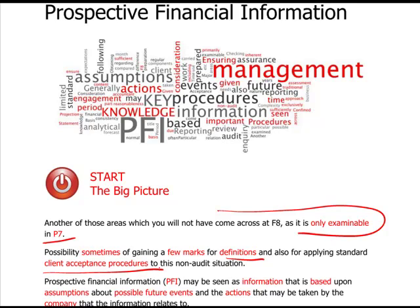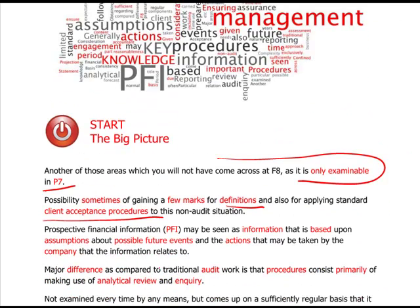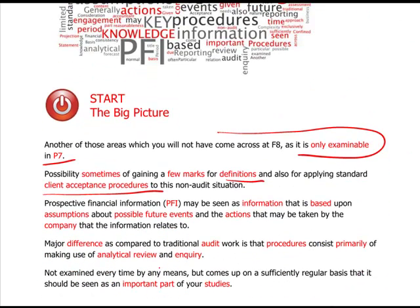So what is prospective financial information? Well, it may be seen as information that is based upon assumptions about the future and actions that may be taken by the company that the information relates to. So unlike a statutory audit looking at last year's historical information, this is about the future going forward - that's a major difference.